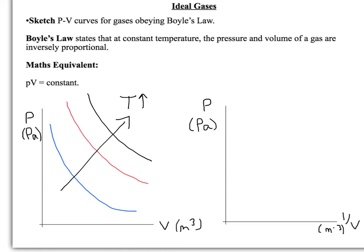If you want to prove an inversely proportional relationship, you should demonstrate that P is proportional to K over V if it is inversely proportional. So if we put pressure against 1 over volume, what you'd expect to find is a graph like this.